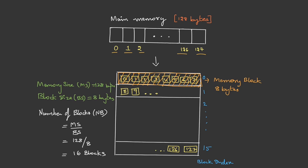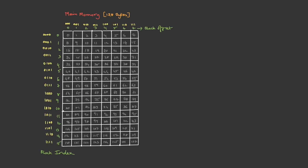Similarly, we can number the columns 0, 1, 2, and so on till 7 — these are called block offset. For convenience, let me redraw the diagram. In this diagram I have represented all 128 cells starting from 0 till 127, and for convenience I have given the block index in binary notation and even the block offset in binary notation.